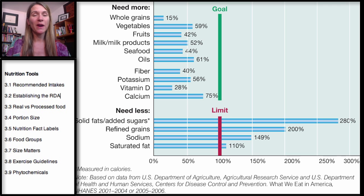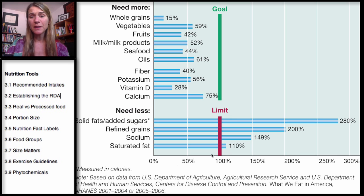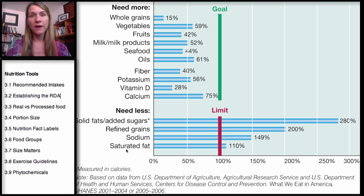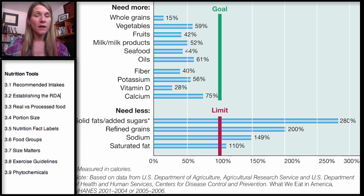You're also going to get grain products in your dessert items. Sodium: most Americans are at 150% of the recommended limit. Saturated fat is at about 110%. We'll cover which types of saturated fat are healthier for you and which are not when we get to the lipid chapter.